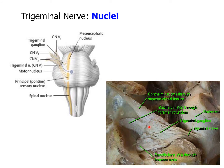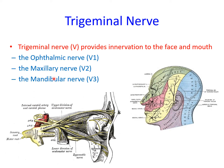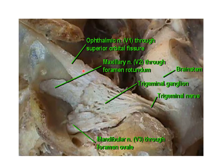The ophthalmic and the maxillary divisions are purely sensory, whilst the mandibular division is a mixed branch. The three main divisions include the ophthalmic nerve (V1), the maxillary nerve (V2), and the mandibular division (V3). The ophthalmic and maxillary divisions travel in the lateral wall of the cavernous sinus. The ophthalmic division leaves the skull through the superior orbital fissure, the maxillary through the foramen rotundum, and the mandibular through the foramen ovale.